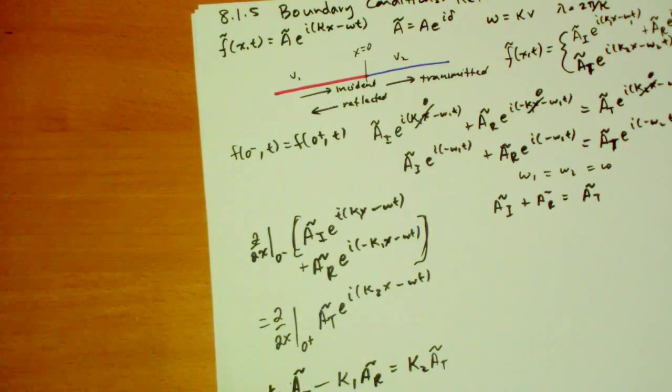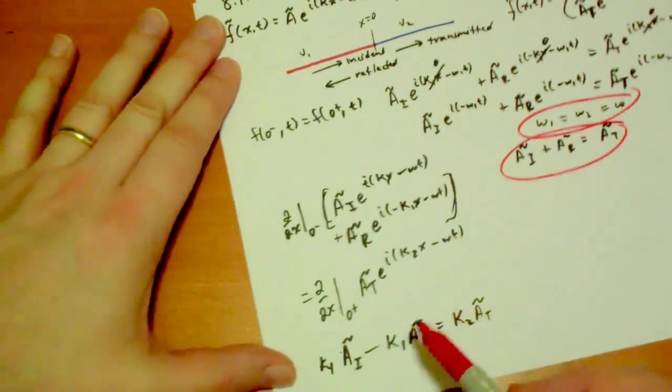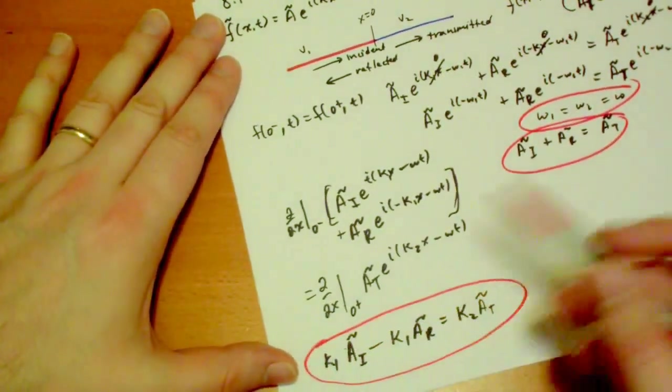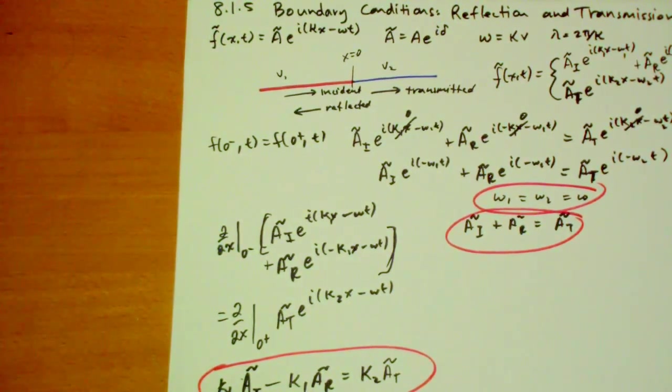So those are the two conditions. Let me circle them for you. The three conditions actually that we conclude. So one is that the omegas are the same. The other is that the amplitudes have to add. And the second is that when you multiply by the k's on each side of the string, then you have to have that condition there apply.